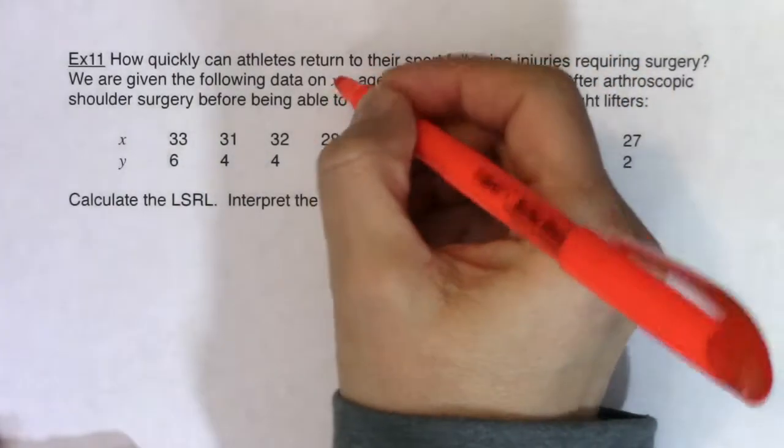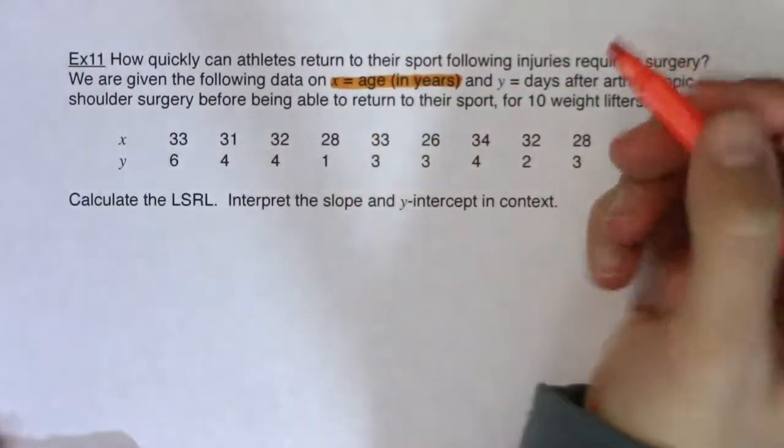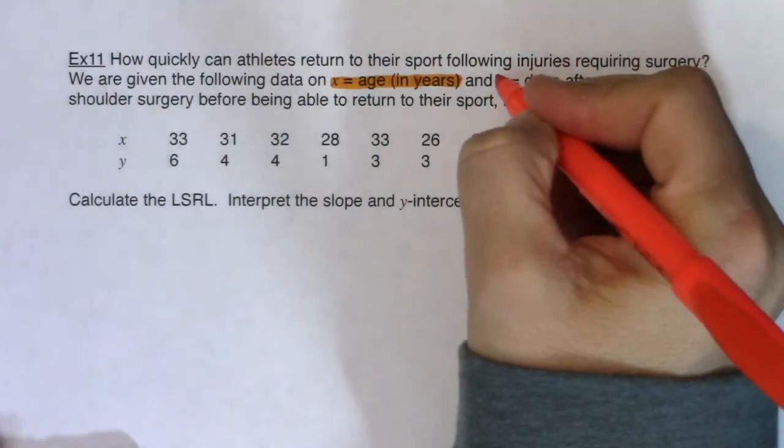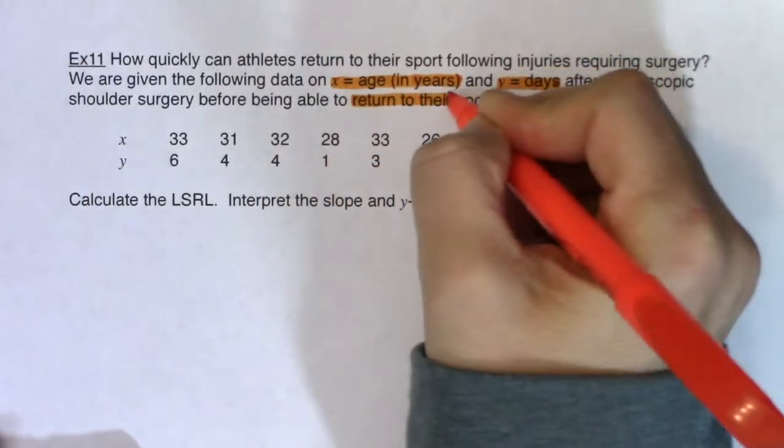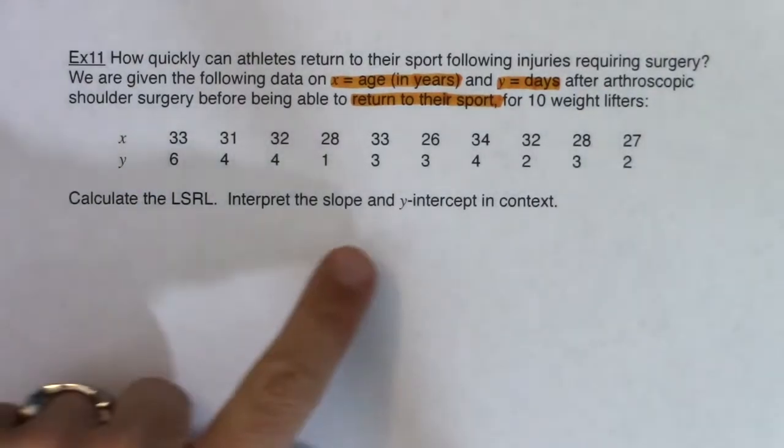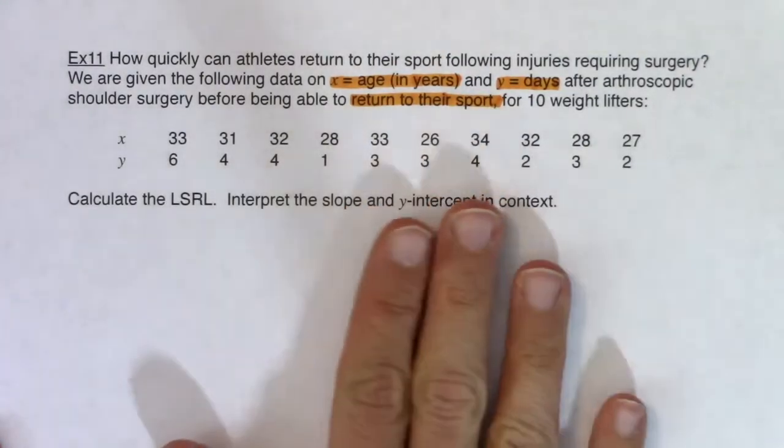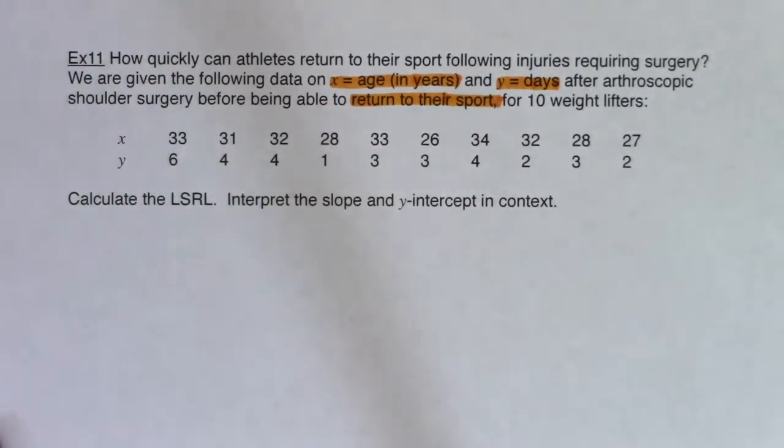So first of all, I see I have two numerical variables. I look at age, which they're giving me in years, and then this looks like return to sport time in days. So I'm going to say y equals days, and then I'm just going to abbreviate it with return to sport.